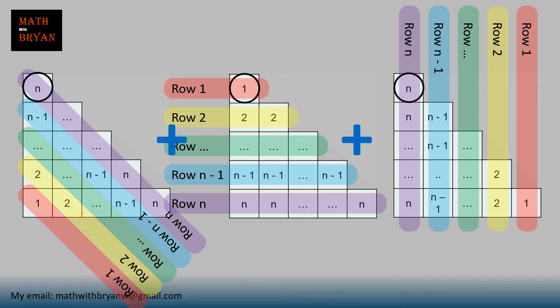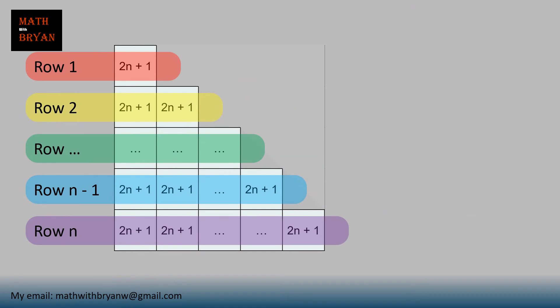You can add each tile together, and you'll notice that each tile adds up to 2n plus 1. Now, in order to find the answer, we need to find how many tiles that say 2n plus 1 are there.